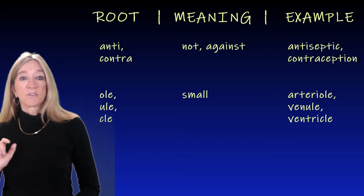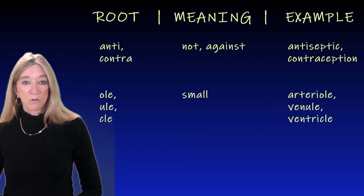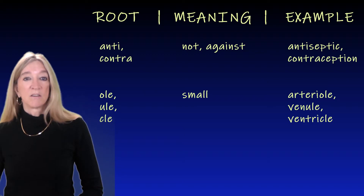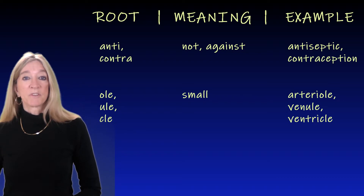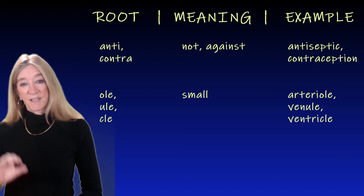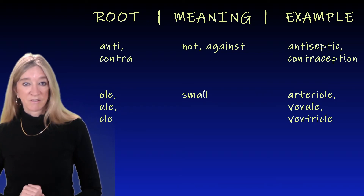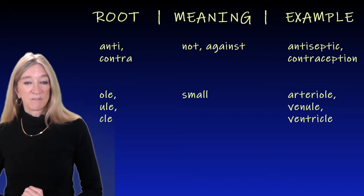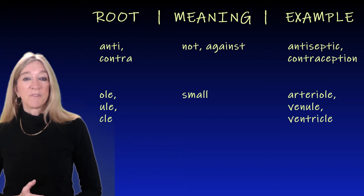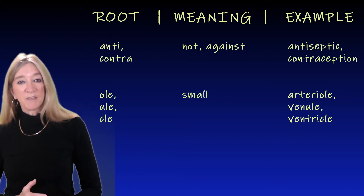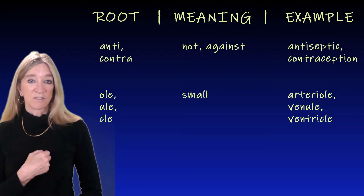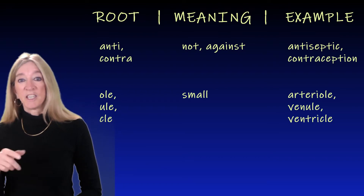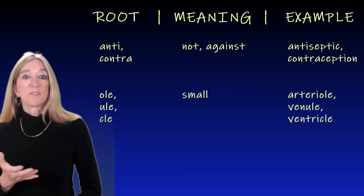The next roots, 'ule,' 'ol,' and 'cle,' all meaning small. Examples: arteriole, a small diameter blood vessel; venule, a small vein; and ventricle, which literally means small belly — of course it's actually a chamber of the heart. This is the same '-cle' as in the word particle, small part.